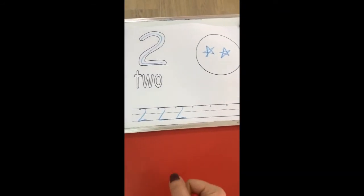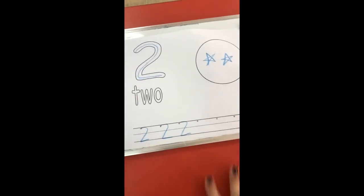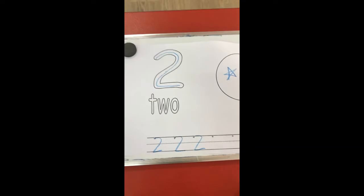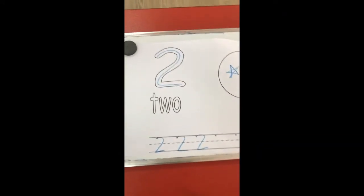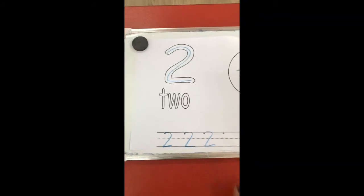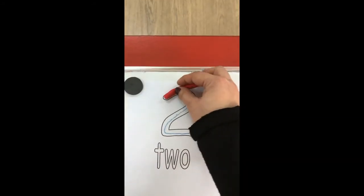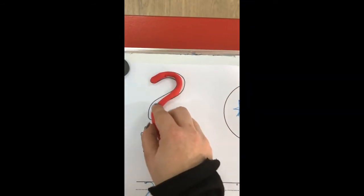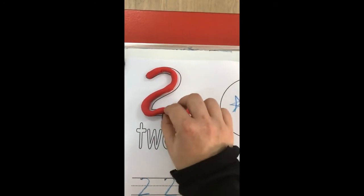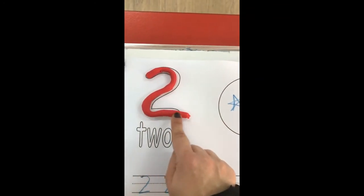I will use the Play-Doh. And I will trace number two on my sheet with the Play-Doh. Here. Round. Slide. Across. Round. Slide. Across.